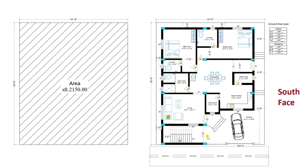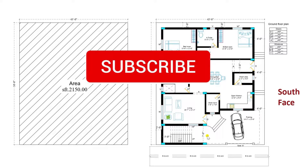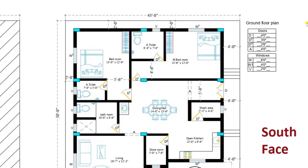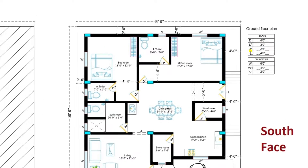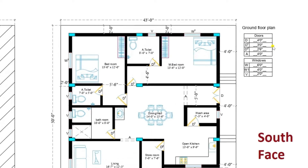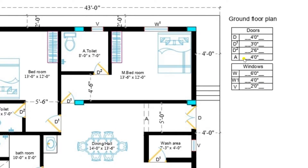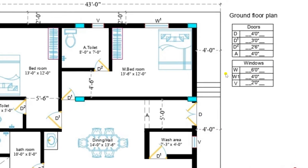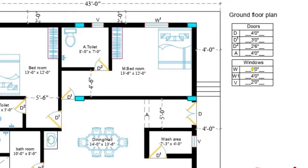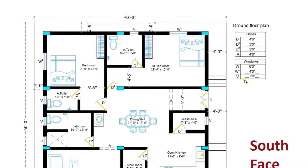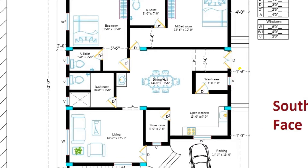Before starting, I request all viewers to kindly subscribe and press the bell icon to get the latest notifications. First of all, we need to see the dimensions. Main door size is 4 feet. D1 indicates doors of bedrooms: 3 feet. D2 indicates doors of toilets. A indicates arch of 4 feet. Main window W is 6 feet. W1 of bedrooms is 4 feet. V indicates ventilator of size 2 feet.